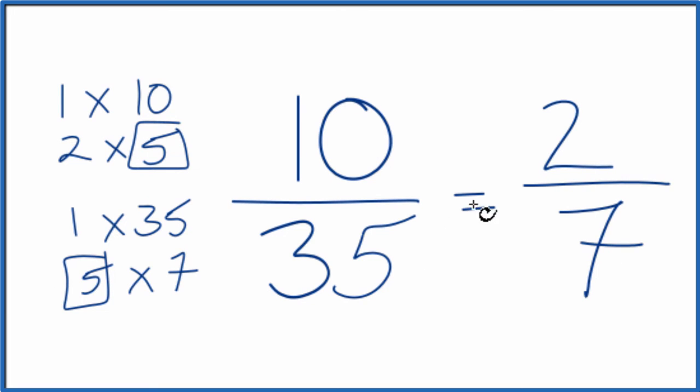So we've simplified 10 over 35 down to 2 over 7. We can't reduce this any further. It's in lowest terms. These are equivalent fractions. 2 divided by 7 or 10 divided by 35, you get the same decimal answer. It's just that we simplified 10 35ths down to 2 7ths.